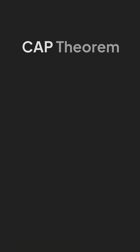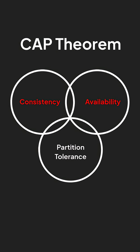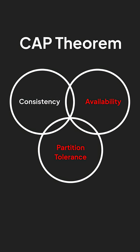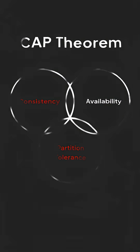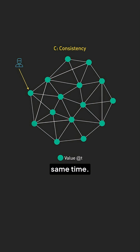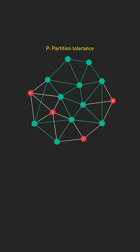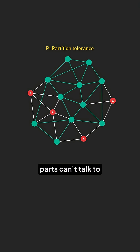CAP Theorem says in a distributed system, you can only guarantee two of these three. One: consistency — all nodes see the same data at the same time. Two: availability — the system always answers requests. And the last one: partition tolerance — the system still works even if parts can't talk to each other.